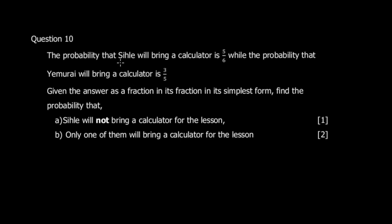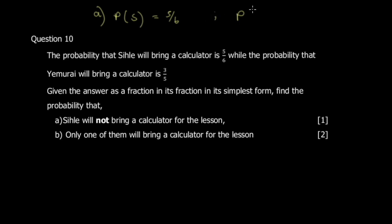Question ten: the probability that Cifler will bring a calculator is 5/6, while the probability that Mrai will bring a calculator is 3/5. Answers should be given as fractions in simplest form. Part a asks: find the probability that Cifler will NOT bring a calculator.